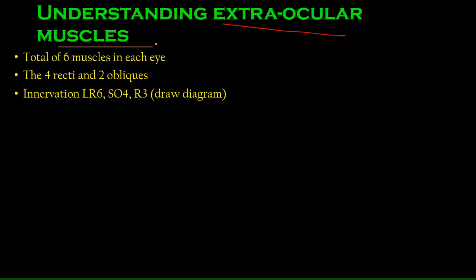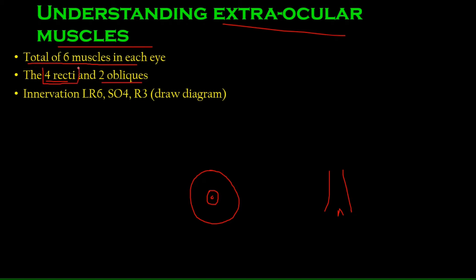These muscles move the eye left, right, up, down, and twist them as well. There are six muscles which act on the eye: four of them are called the rectus muscles and two are called the oblique muscles. There's a superior rectus from above, a medial rectus from the medial side, a lateral rectus from the lateral side, and an inferior rectus from below.